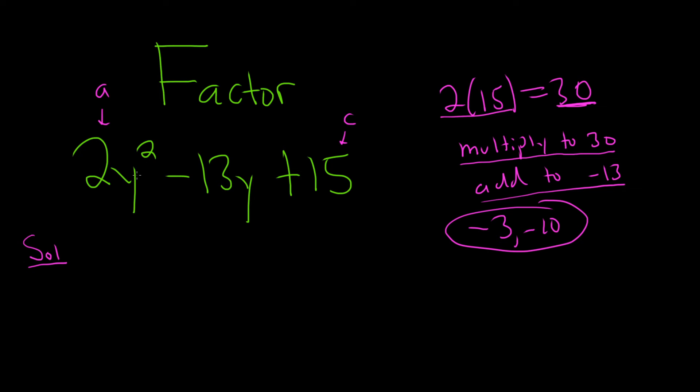All right, so here's the trick now. You rewrite this as 2y squared, and you take this piece and you break it up into negative 3 and 10. So I'm going to write it as negative 10y minus 3y. Just as well, I could have done negative 3y minus 10y. It doesn't really matter, and then plus 15. You see this checks too. Negative 10y minus 3y is negative 13y.